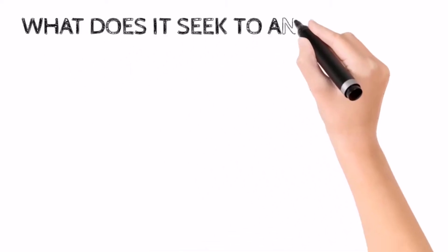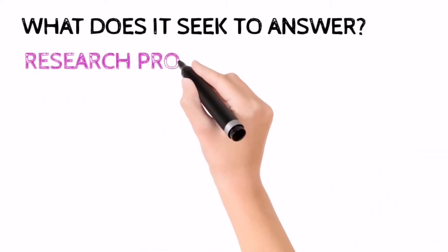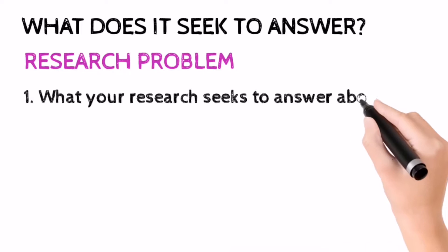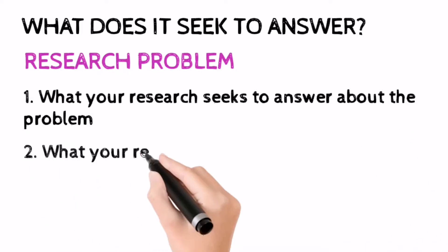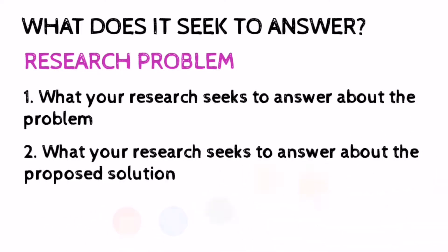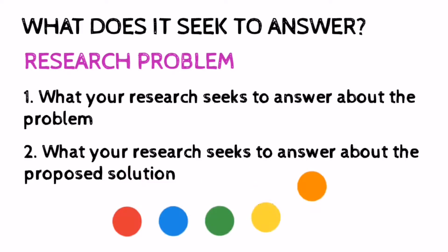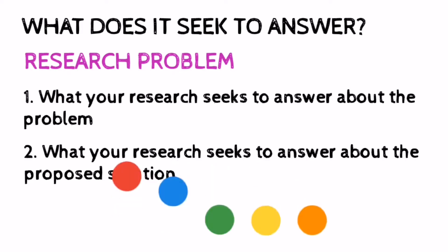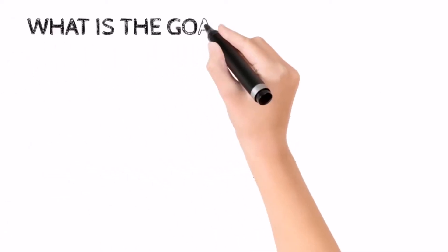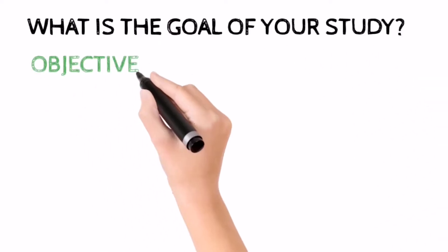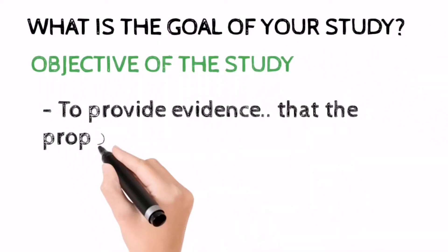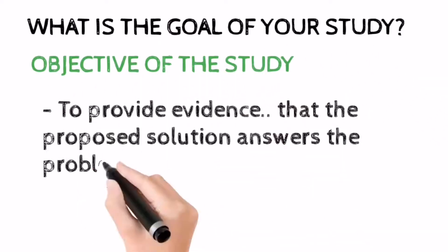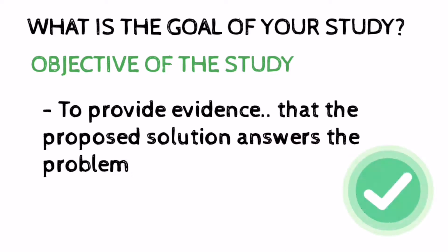What does it seek to answer? The research problem should be able to answer this question. Basically, you have two research problems: what your research seeks to answer about the problem, and what your research seeks to answer about the proposed solution. The objective of the study should answer the question of what the goal of your study is — your goal is to provide evidence in order to answer the research problem.